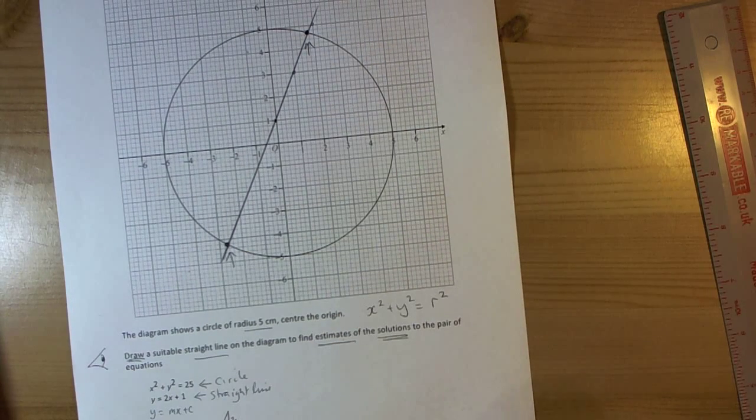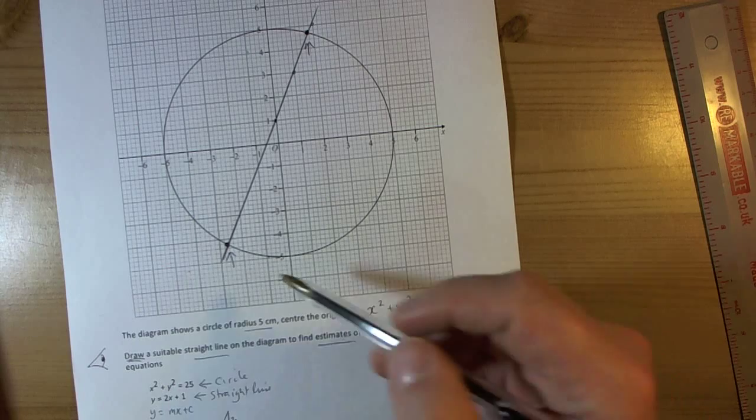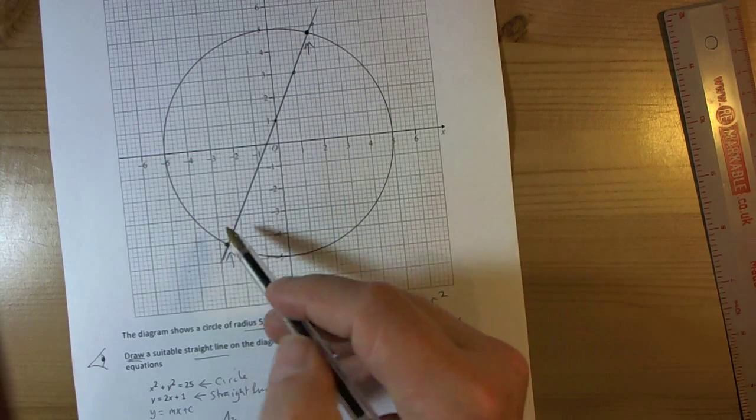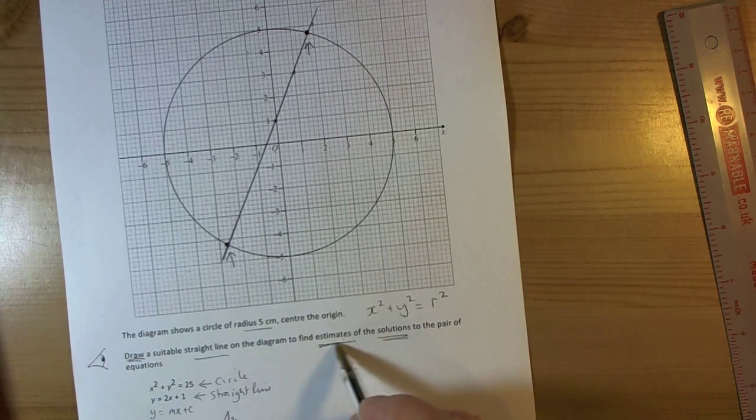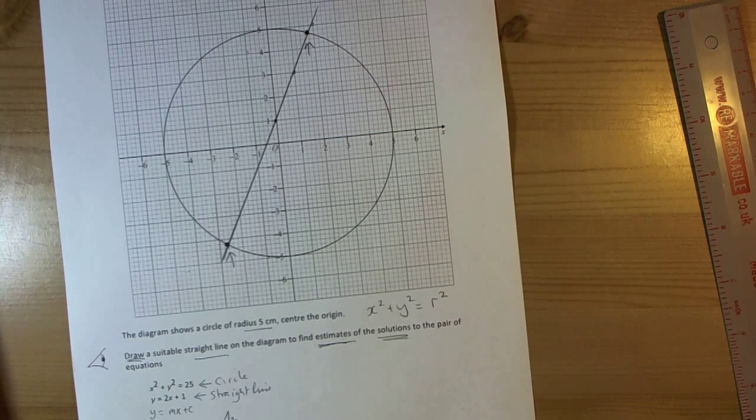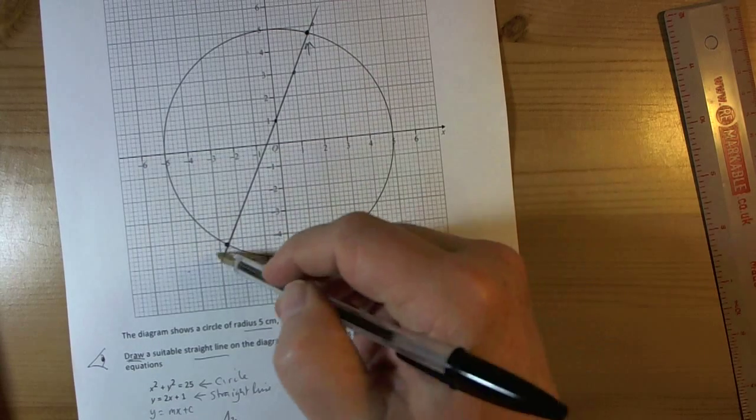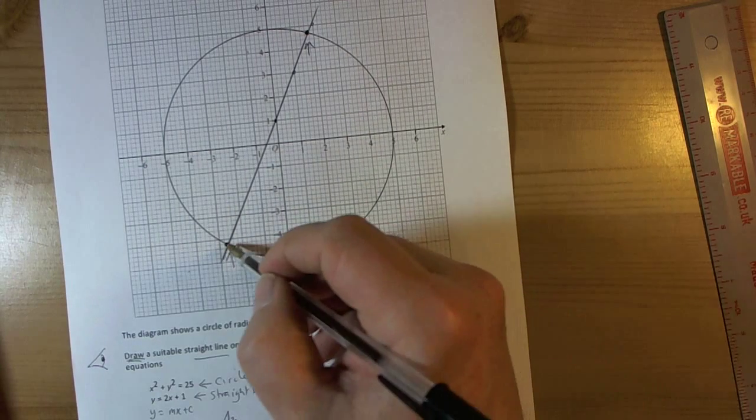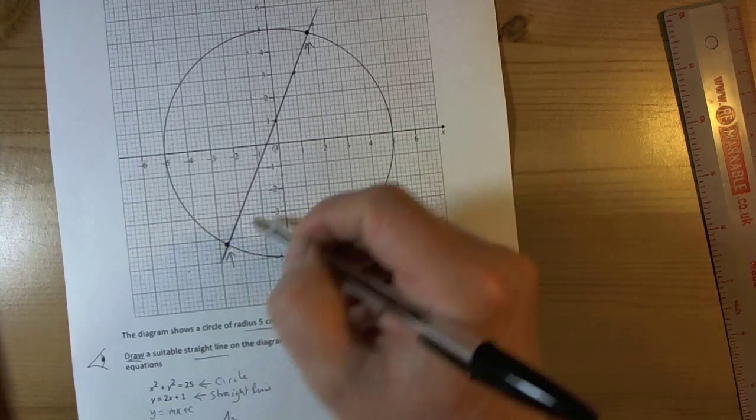If you don't get those perfect same answers there, then as long as you show your method and you're close, it is about estimating. So you could have been 0.1 out on each of these and that would have been fine in terms of you showed your method. And the exam would allow a little bit of leeway on one square difference.